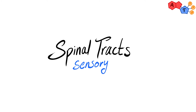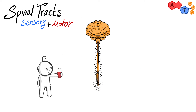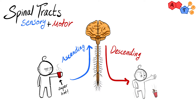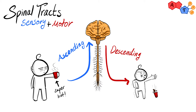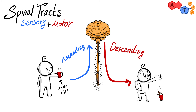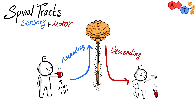Welcome to another ATP video. In this video we'll be discussing sensory and motor pathways passing through the spinal cord. These pathways are also known as ascending and descending tracts respectively, which makes sense — ascending takes information from the periphery through the spinal cord to the higher centers in the brain, thus sensory, while descending brings information from the higher centers down to different segments of the spinal cord.